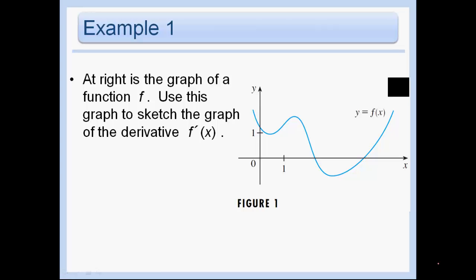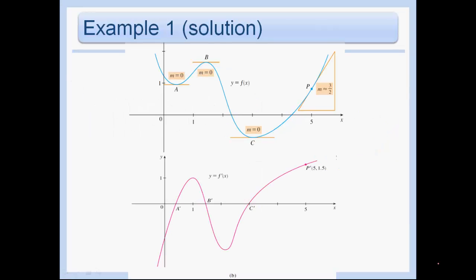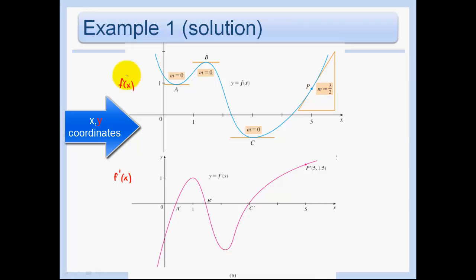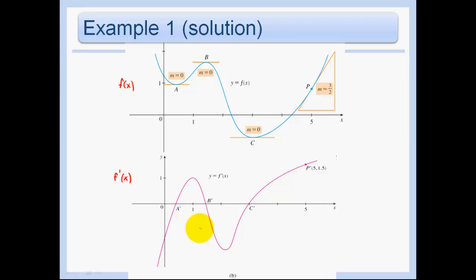In example 1, we're going to look at the graph of the function f and use it to sketch a graph of the derivative. Basically how I like to do this is I like to draw one on top of the other. Here we have the graph of f of x and right below it I draw f prime of x. I keep the x coordinates all the same because in this graph I'm drawing x, y coordinates and here I'm drawing x and then the slope as my coordinates. So the first things that I like to mark are where the derivative is 0.